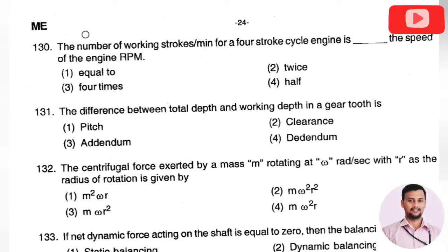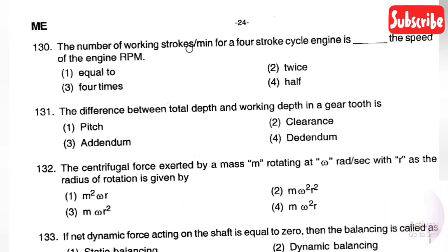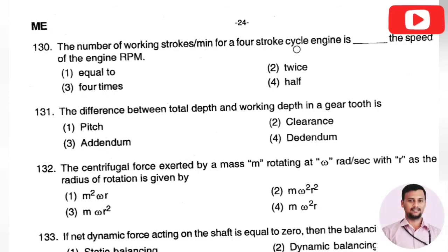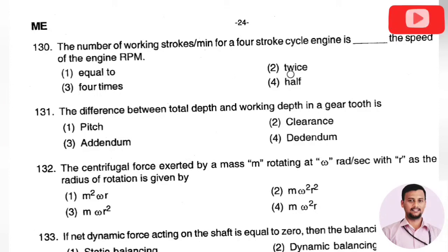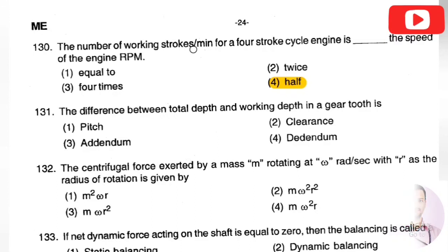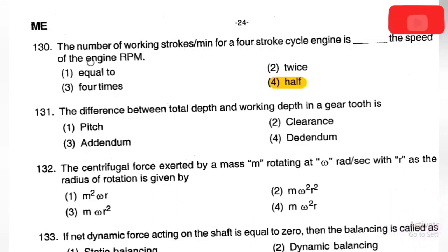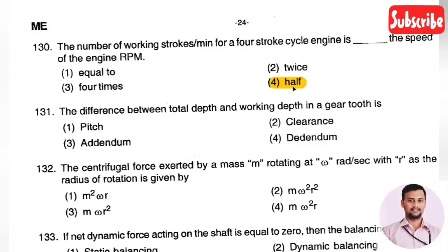The next question: the number of working strokes per minute for a four-stroke cycle engine is dash the speed of the engine in RPM. Options are — equal to, twice, four times, or half the RPM. The right answer is Option 4 — the number of working strokes per minute of a four-stroke cycle engine is half the speed of the engine in RPM.